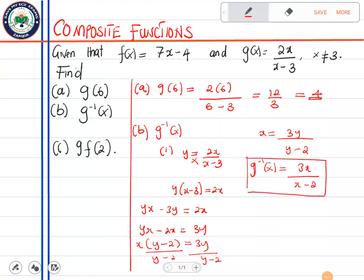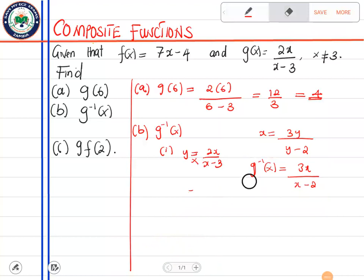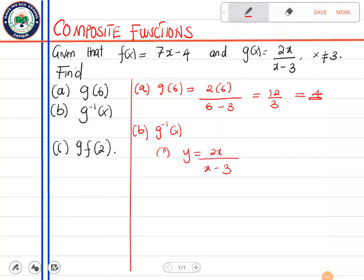The second method is what I like to use myself because I know there's no one way of solving a mathematical problem. The second method is you do the same - you introduce y there. After introducing y, you swap: where there's x you put y and where there's y you put x. So where there's y we put x, where there's x you put y. Then you cross multiply: xy minus 3x equal to 2y.